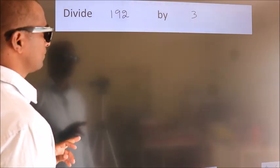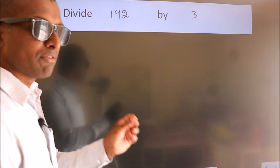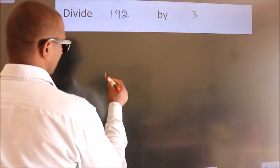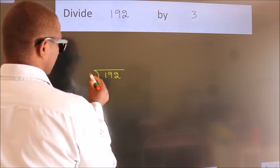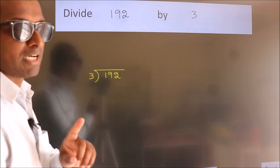Divide 192 by 3. To do this division, we should frame it in this way. 192 here, 3 here. This is your step 1.